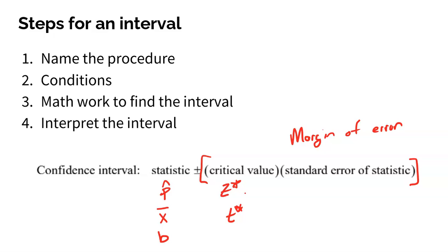Your level of confidence determines how far you're gonna reach for that Z star or T star. And then we multiply that critical value by your standard error. That's the standard error of your sample proportion, the standard error of your sample mean, or the standard error of your slope, all depending on what you're looking at.